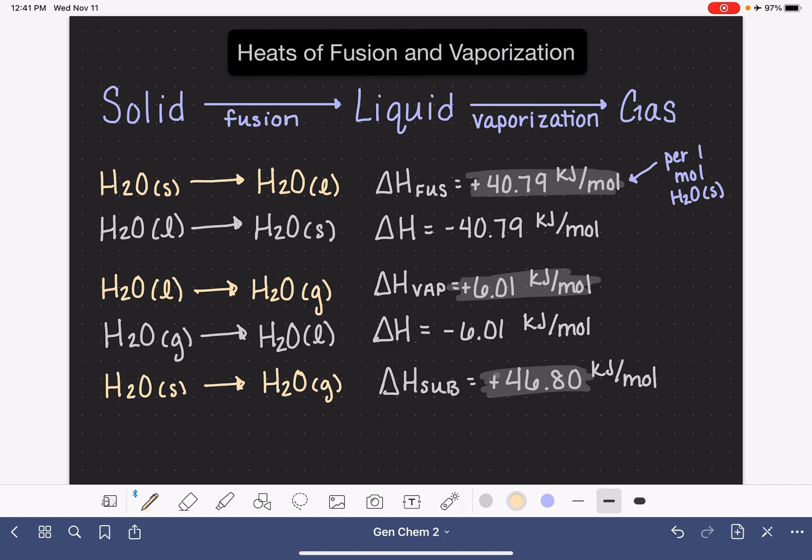The last thing that I want to mention has to do with the overall magnitude of delta H of fusion or vaporization. If you're trying to make some predictions about the value, if you have a substance that has very high intermolecular forces, that means that the molecules are being stuck together very tightly. This typically corresponds to a high delta H of vaporization. It takes more energy to pull them apart. And also a high delta H of fusion, and likewise would be a high delta H of sublimation as well.